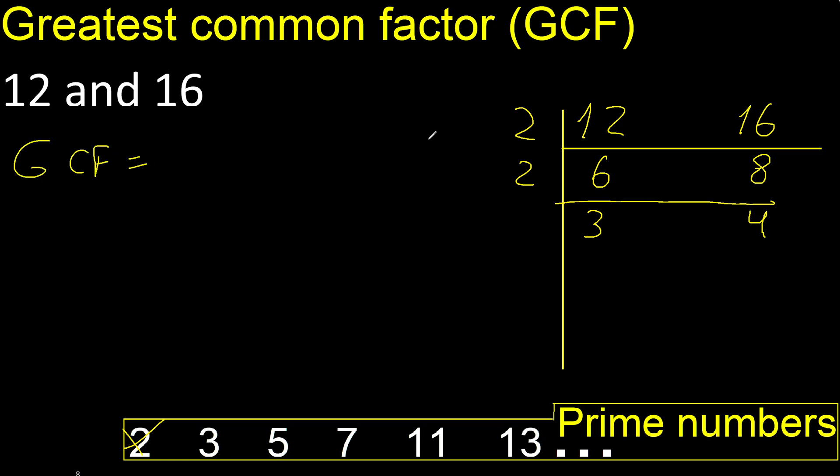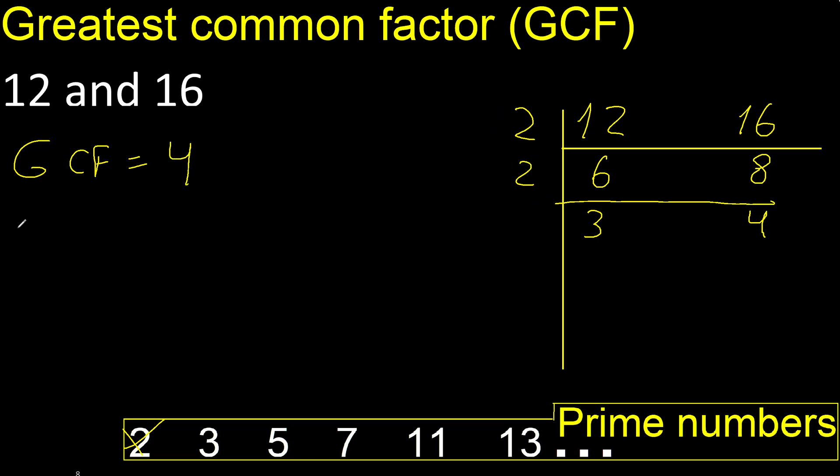Multiply: 2 multiplied by 2 equals 4. Finish.